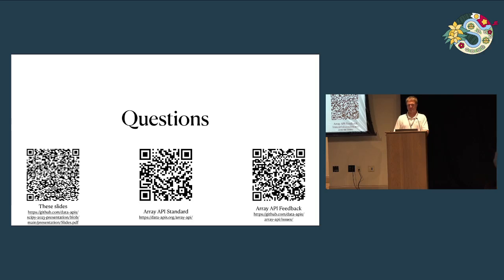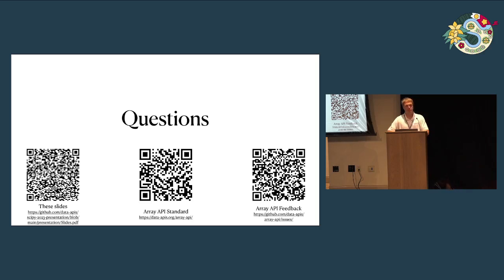Audience question: Could MPI for Python reductions of NumPy arrays — where you pass a NumPy array and it gets summed across processes — be part of the array API, where you could have a tensor instead of a NumPy array with the same result? Response: I'm not sure if that's something we've discussed a lot for standardization. Maybe something like that would use the array API instead of having to be standardized, but it would be something to bring up on our issue tracker if you're interested.